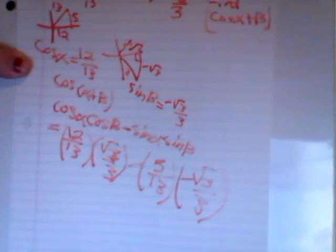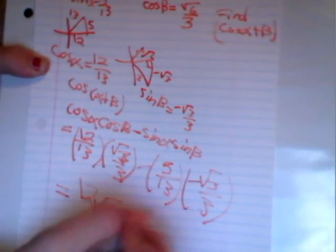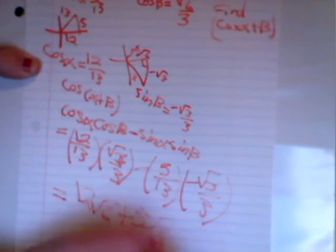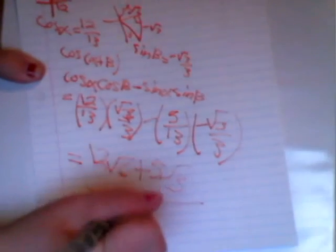Which equals 12 square root of 6 plus 5 square root of 3, all over 39.